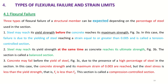We are continuing from the fourth point and discussing the types of flexural failure and strain limits. This is the most important point. The first part is flexural failure. Three types of flexural failure of a structural member can be expected depending on the percentage of steel used in the section. Number one: steel may reach its yield strength before the concrete reaches its maximum strength, meaning steel fails first and then concrete follows. In this case, the failure is due to the yielding of steel, reaching a strain equal to or greater than 0.005.